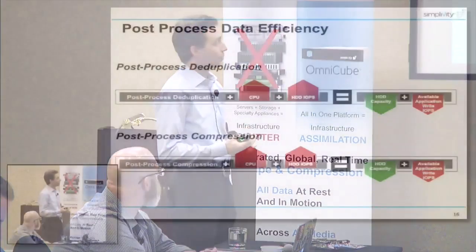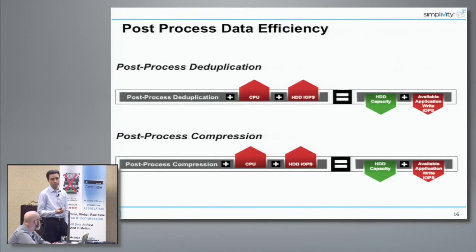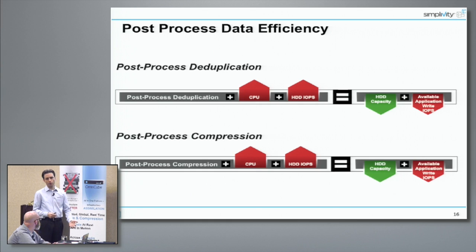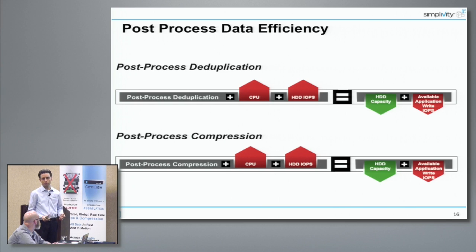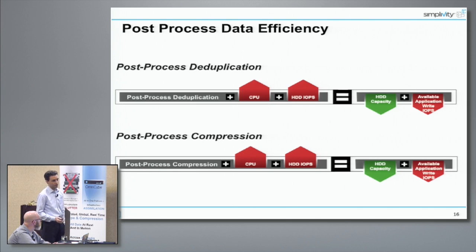Compression actually looks remarkably similar. Post-process compression is going to consume CPU and IOPS for the same reasons we talked about on the dedupe side, and the net effect will be eventually decreasing your hard drive capacity — and unfortunately your available application IOPS as well. So it's an exchange, and what you're deciding with either of these algorithms is that you have a capacity problem and want to get that capacity down eventually.